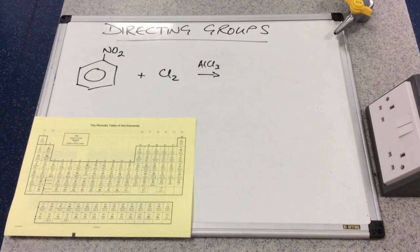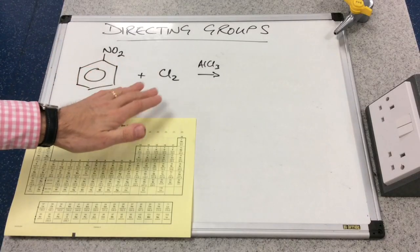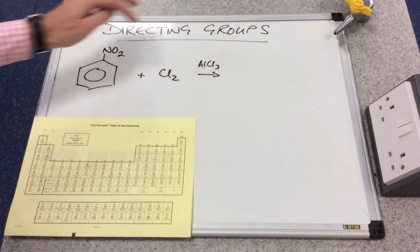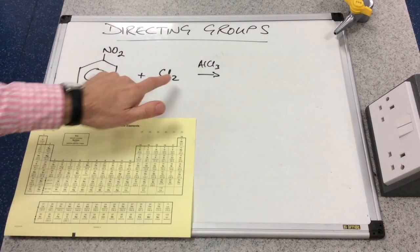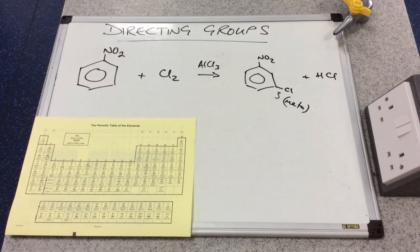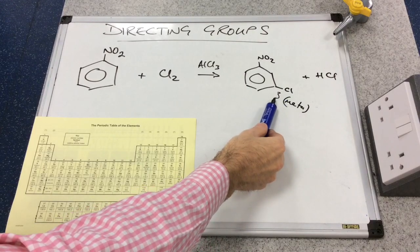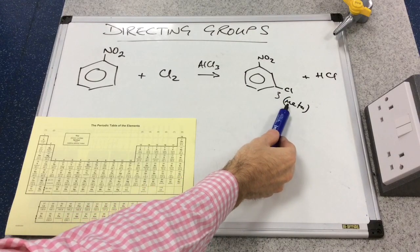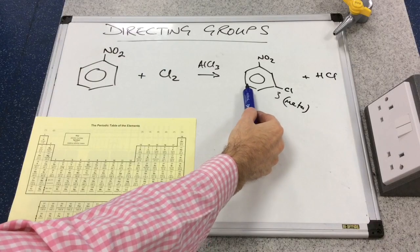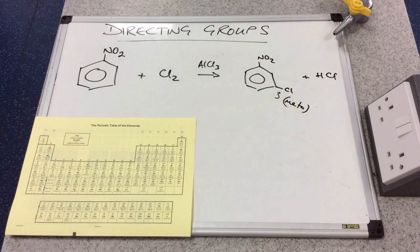Now let's look at the nitro group. With nitrobenzene reacting with chlorine in a monosubstitution, using an AlCl3 catalyst to generate the electrophile, the nitro group directs substitution to the 3 position — the meta position. Position 5 is the same by symmetry, so the nitro group is 3,5-directing, or meta-directing.